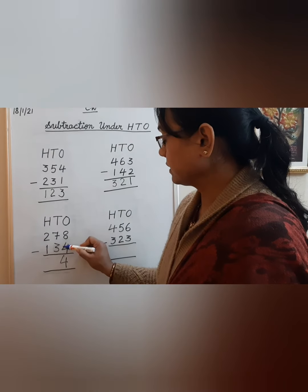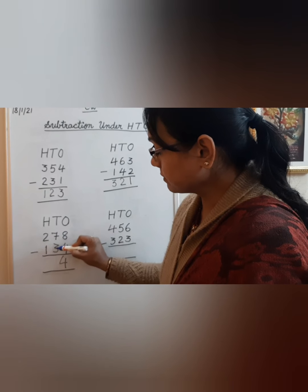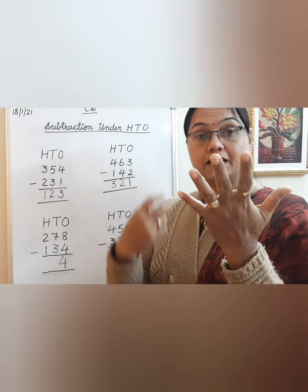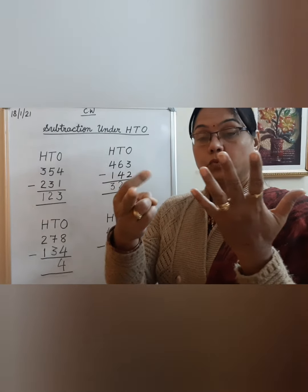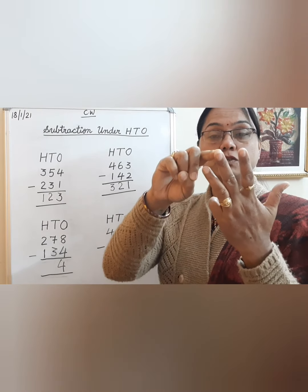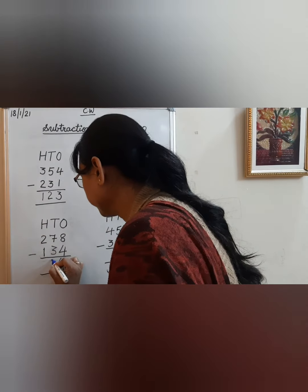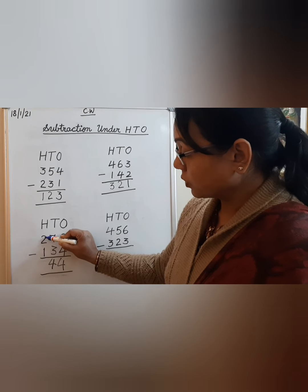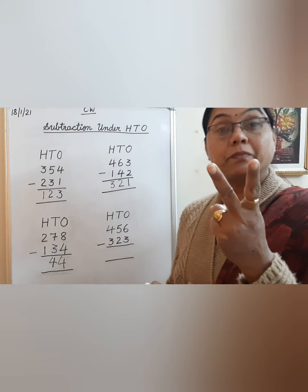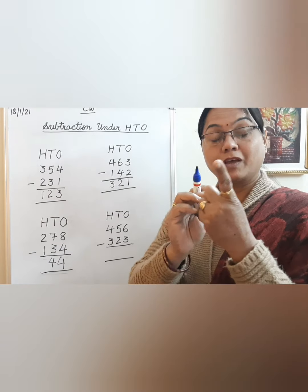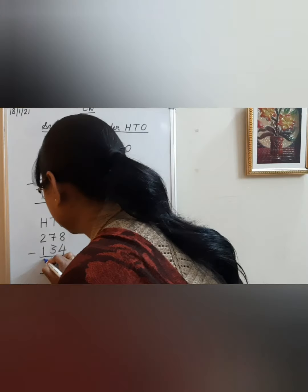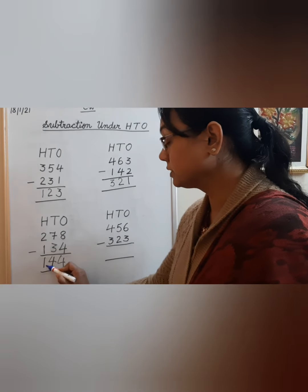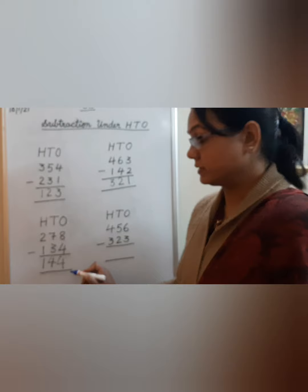Write 4. Then move to the hundreds place: 2 minus 1 — how many are left? Only 1, so write 1. So 278 minus 134 is equal to 144. This is the answer.